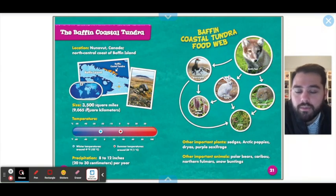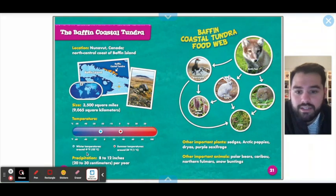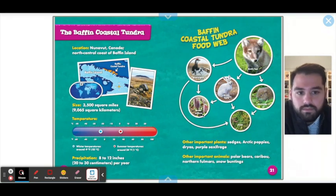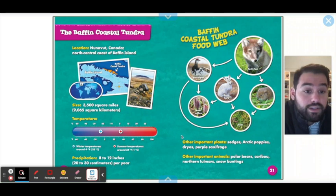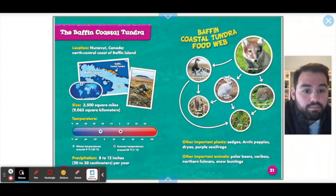The Baffin Coastal Tundra is about 3,500 square miles and the temperature ranges from negative 9 degrees to 34 degrees. It looks like they have a lot of animals and also certain plants that we have learned about — like the arctic fox, the arctic hare, lemmings, and moss and arctic willow grow there.